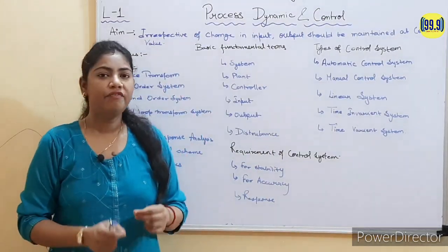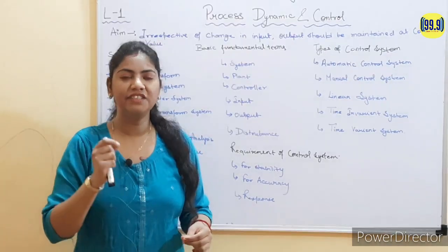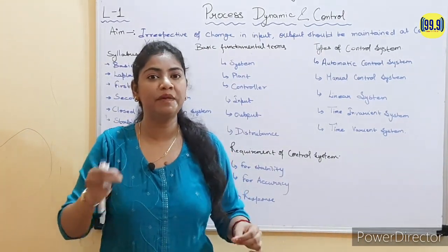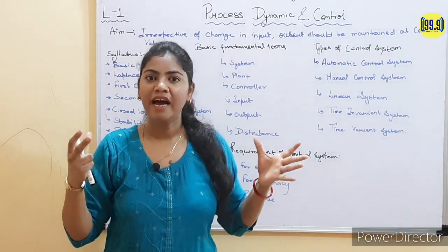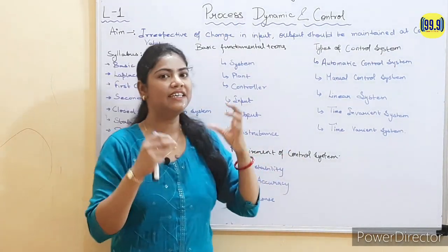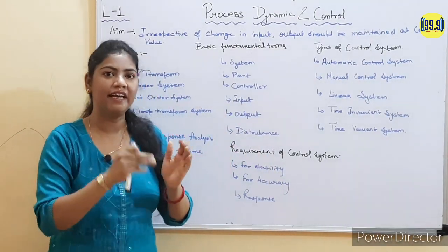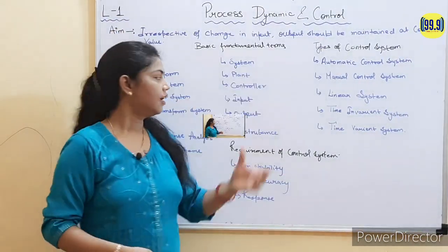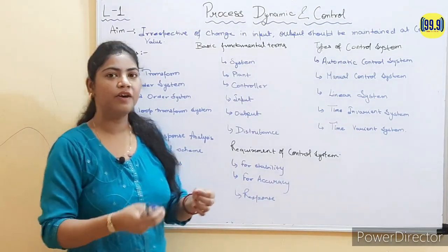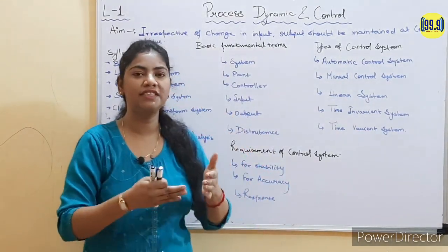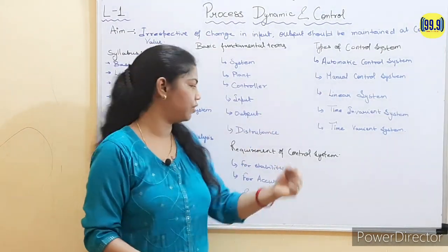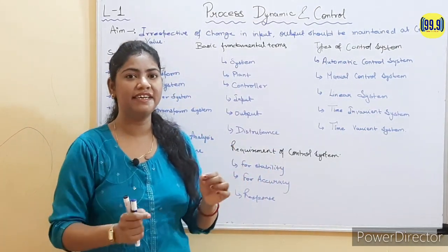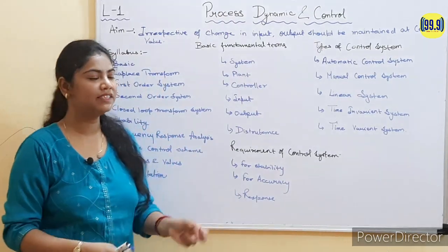Let's talk about input. Input is the external source or signal which is provided to the system to produce a particular response or output. So input is the external signal we give to the process so that we can produce a particular amount of output. Now, output is what is produced when the input is applied to the process. Next, disturbance — disturbance is an external or internal signal which disturbs the process. There are two types: external disturbance and internal disturbance.